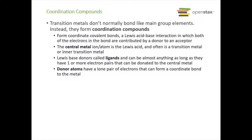Transition metals don't bond normally like main group elements — they tend to form coordination compounds. These involve coordinate covalent bonds, which are a Lewis acid-base interaction in which both electrons in the bond are contributed by a donor to an acceptor. An electron pair is donated from a ligand to the central metal ion or atom, which acts as our Lewis acid or electron pair acceptor. It's often a transition metal or an inner transition metal.